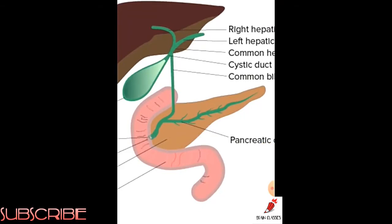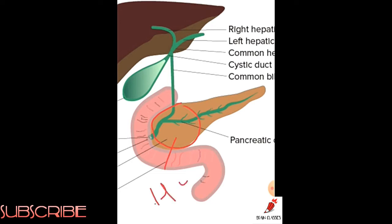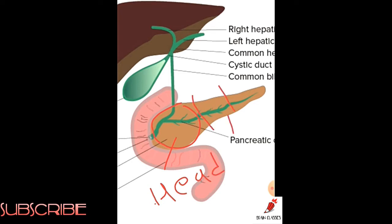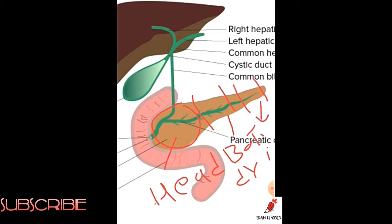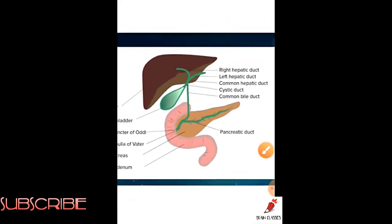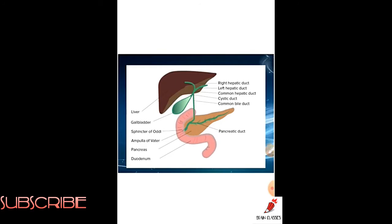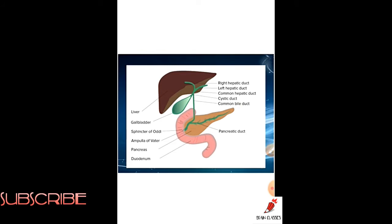The head part is directly attached to the duodenum. The middle portion of the pancreas is called the body, and the last portion of the pancreas is called the tail. The pancreas is a double gland — it has an exocrine portion and an endocrine portion.